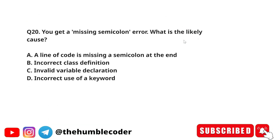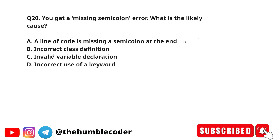You get a missing semicolon error — what is the likely cause? The options are: A) a line of code is missing a semicolon at the end, B) incorrect class definition, C) invalid variable declaration, D) incorrect use of a keyword. The correct answer is option A — the error itself makes it clear: a semicolon is missing at the end of a line.